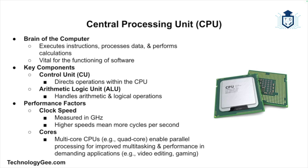The ALU performs arithmetic and logical operations. Another key purpose of the CPU involves clock speeds and cores. The performance of a CPU is often determined by its clock speed, measured in gigahertz, which indicates how many cycles per second it can perform, and its number of cores, which allows for parallel processing. For example, a quad-core CPU can handle multiple tasks simultaneously, improving performance and multitasking in demanding applications like video gaming and editing.